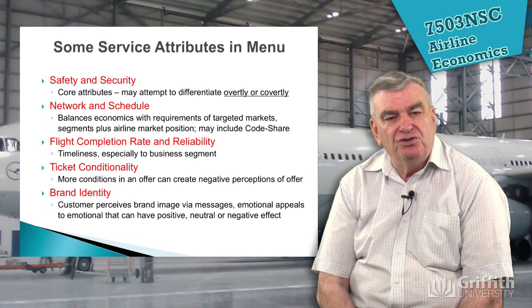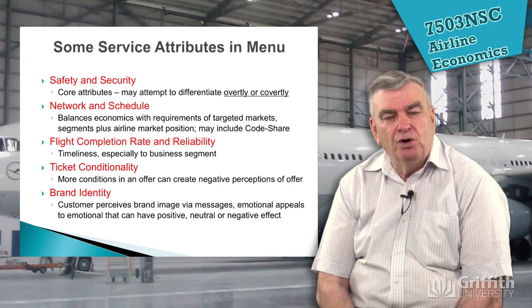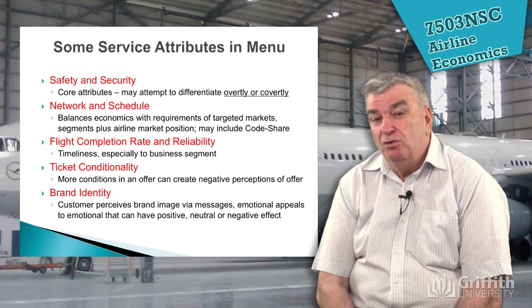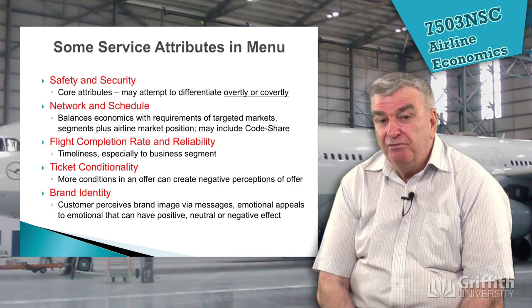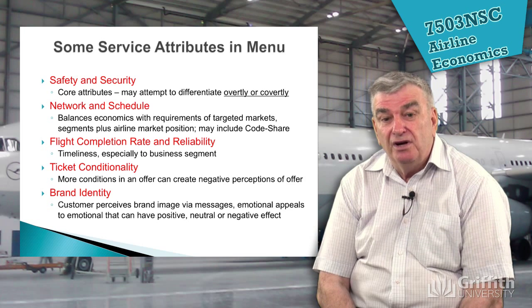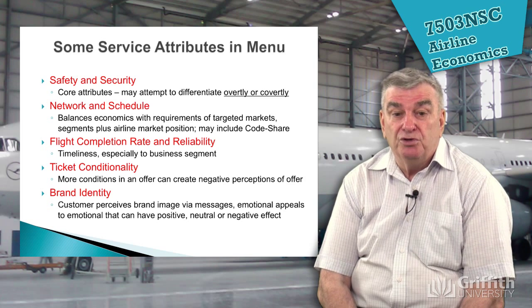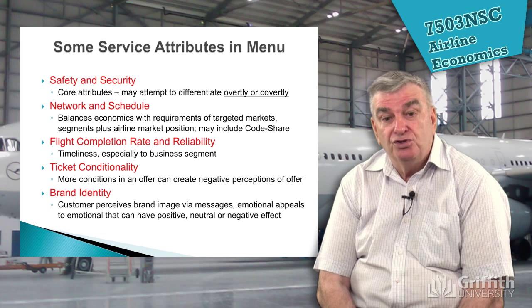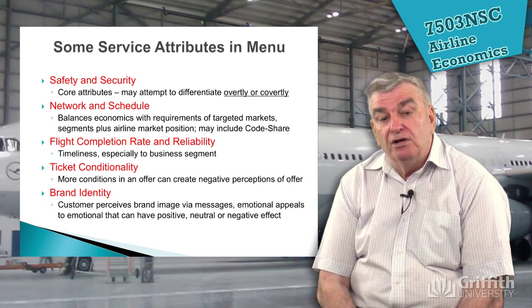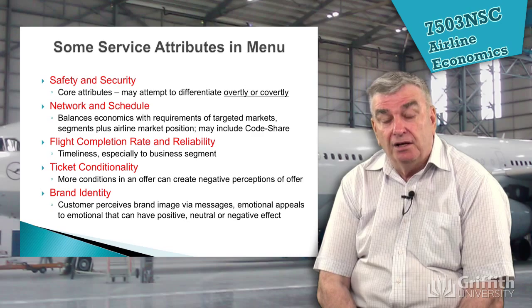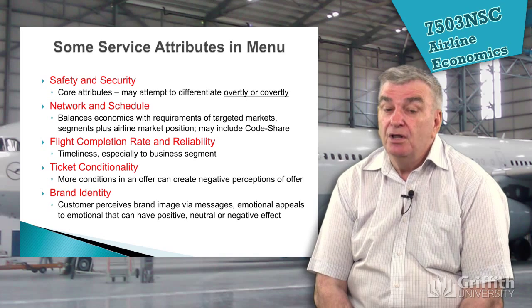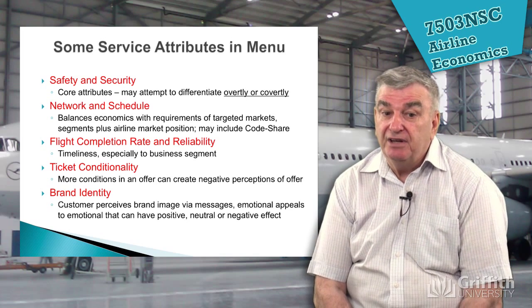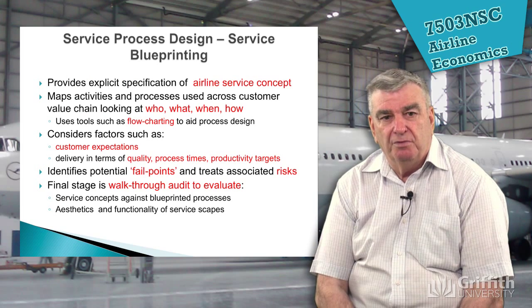We'll be looking at things such as safety and security, the network we operate, and the schedules. For example, changing a schedule by departing just half an hour later may make passengers go to another airline. We'll look at flight completion rate and reliability — airlines often have to report to governments to show they are providing a good and reliable service. We'll also look at ticket conditionality — you bought a very cheap $100 ticket, but if you miss your flight, you've lost your ticket and will have to buy another. And of course, brand identity.